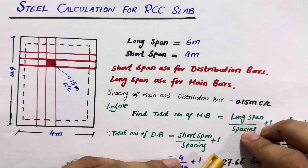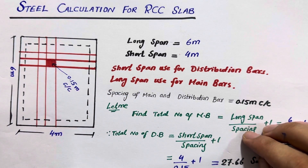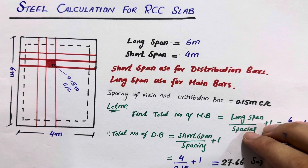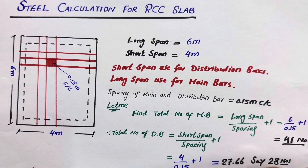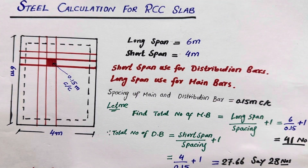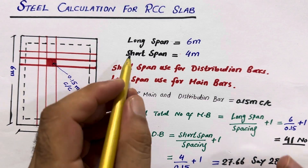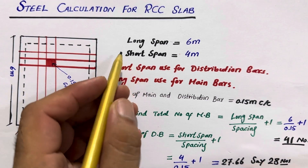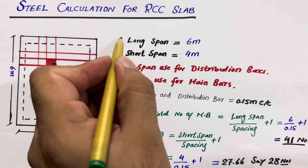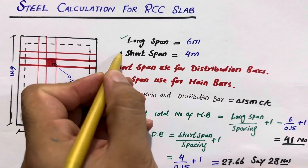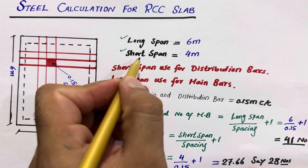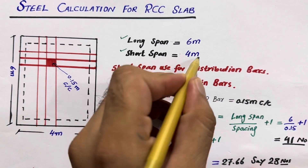If you are new on this channel, please subscribe and like this video. This is a very interesting video about steel calculation. First of all, you can see this is the long span which is six meter, and the next one is the shorter span which is four meter.